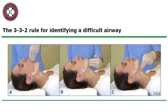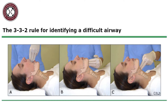The Mallampati score system is a tool used to determine how much space in the mouth the tongue occupies. Scoring ranges from one to four. The more space the tongue occupies in the mouth, the higher the Mallampati score will be. A higher score translates into a greater likelihood of a difficult intubation.